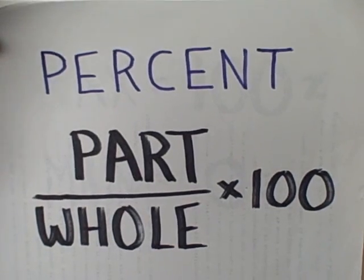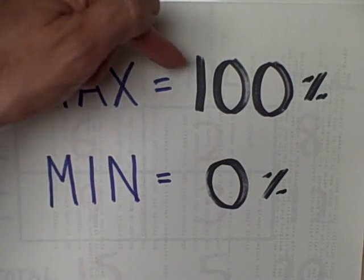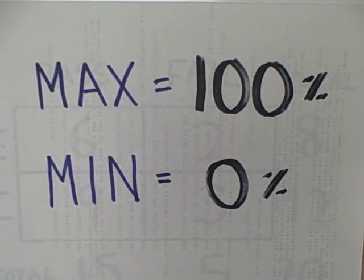This means that with simple percents, we have a theoretical maximum of a hundred percent when the part is as large as the whole, and a theoretical minimum of zero percent when our part is zero.